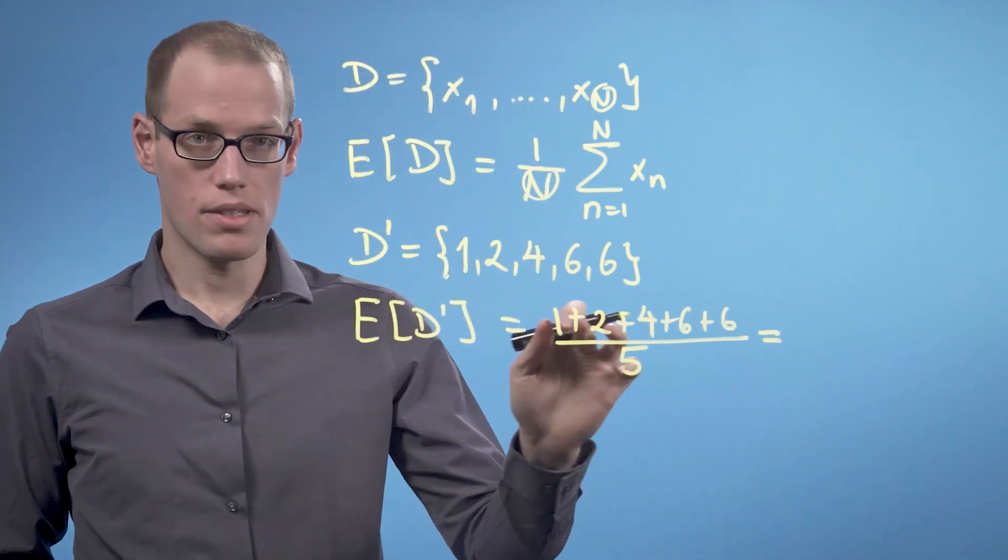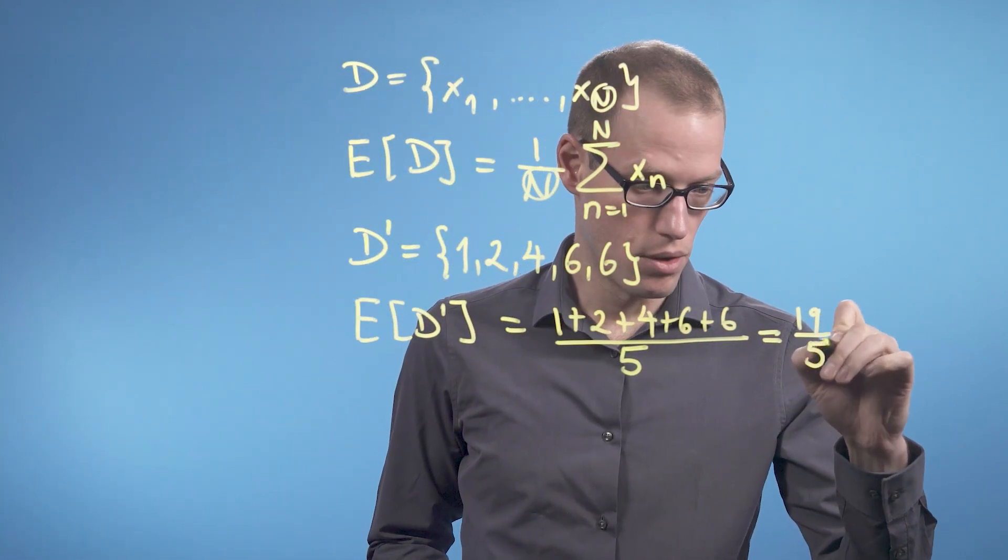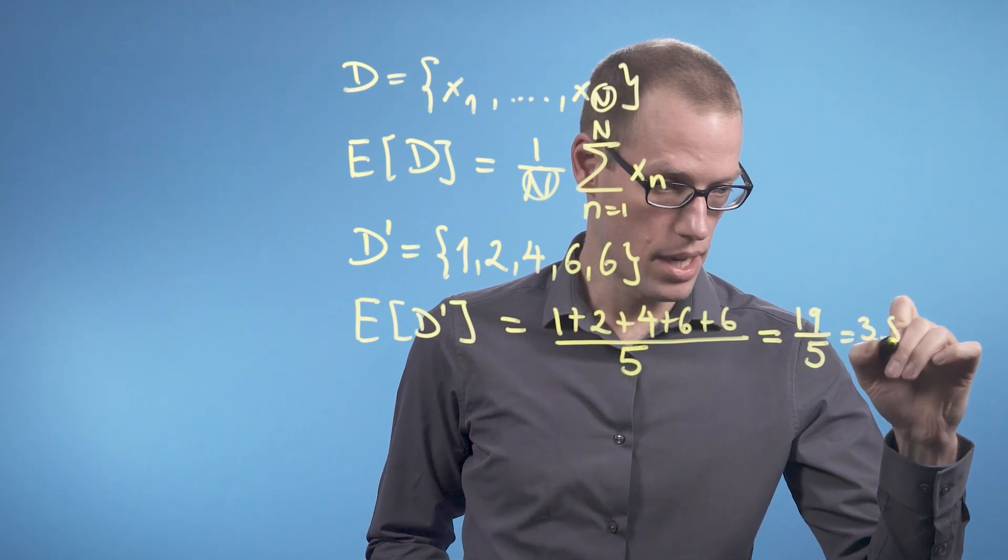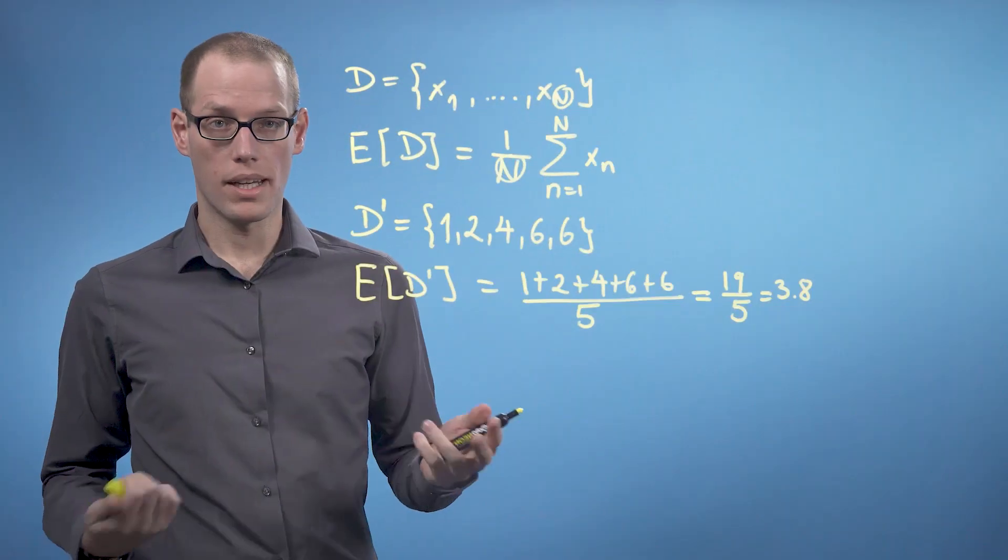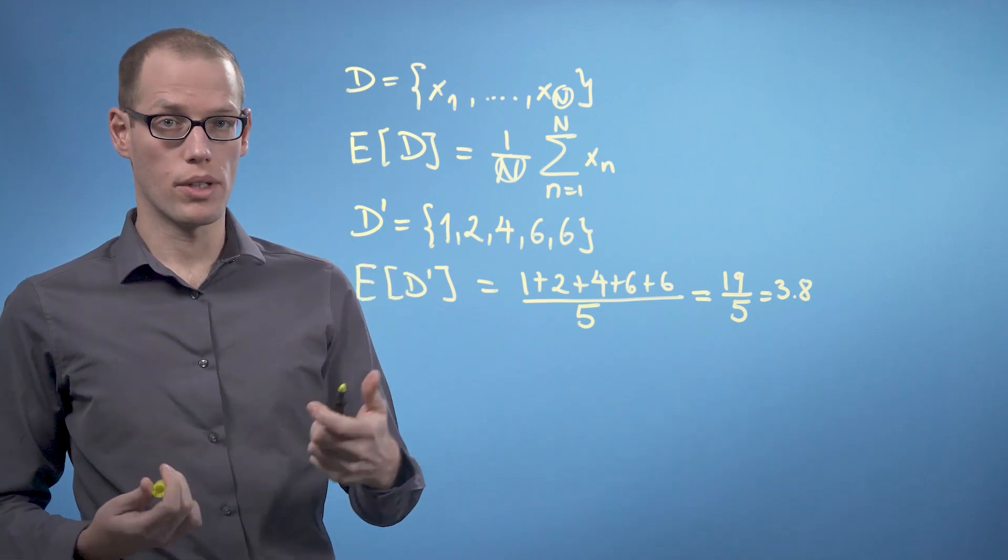So if we sum these things together and divide by 5, we get 19 over 5 or 3.8. We can clearly see that 3.8 is not part of the dataset and cannot even be achieved by rolling a dice.